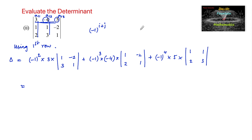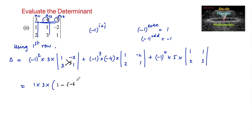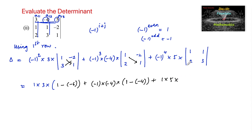Since 2 is even, the first term is +1 × 3 × (1×1 − (−2)×3) = 3 × (1 − (−6)) = 3 × 7. The second term: (-1)^3 is odd, so −1 × (−4) × (1×1 − (−2)×2) = 4 × (1 − (−4)) = 4 × 5. The third term: (-1)^4 is even, so +1 × 5 × (1×3 − 2×1) = 5 × 1.